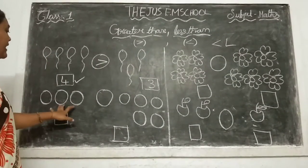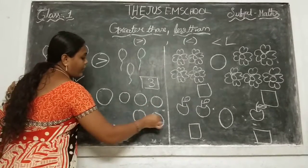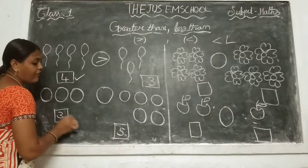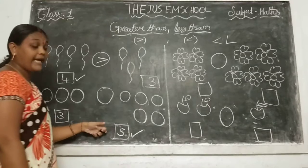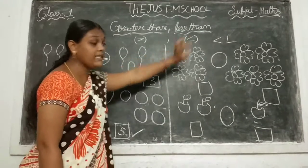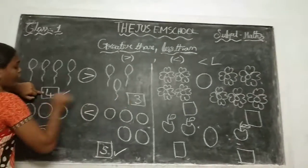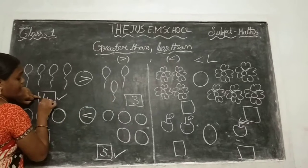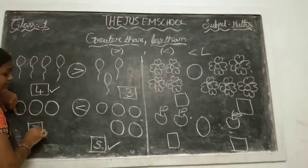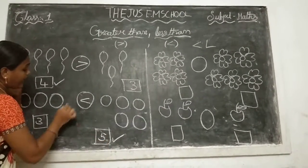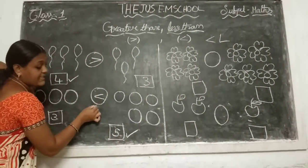And see the next one — how many circles are here? 1, 2 and 3. And here: 1, 2, 3, 4 and 5. Now compare 3 and 5. 5 is the big number. The mouth is open to the big number side, so that symbol is less than. Now identify: 4 and 3 — 4 is the big number, mouth open to big number side — greater than. And 3 and 5 — 5 is the big number — so less than.